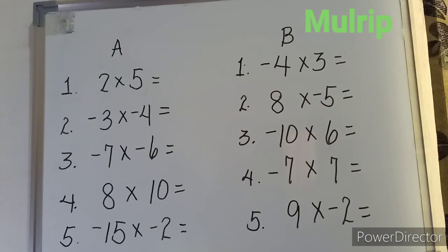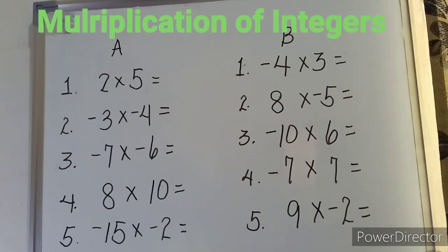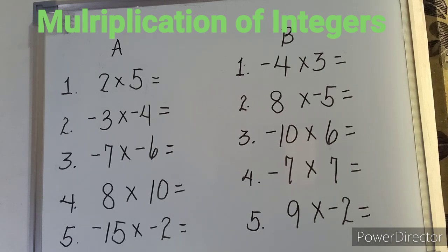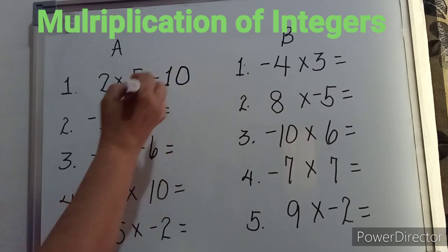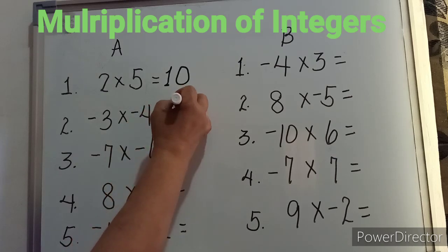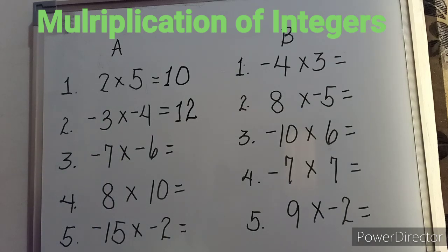Let us work on examples so you can find out what result we will have, especially on the signs of the product. Teachers, take note that the numbers we are multiplying are called factors and the result is a product. Example number one: two times five gives us ten. Negative three times negative four gives us positive twelve.